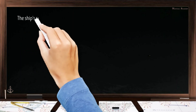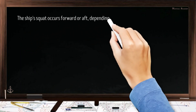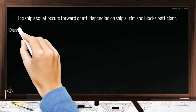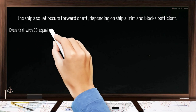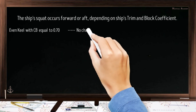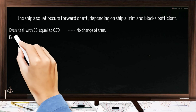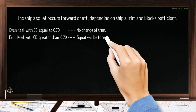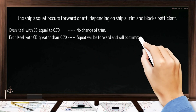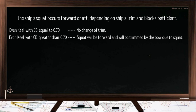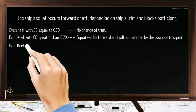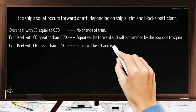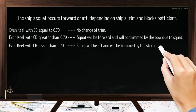Ship squat usually takes place either on the forward or after part of the vessel depending on the ship's trim and block coefficient. If the ship is floating on an even keel with a block coefficient equal to 0.70, there will be no change of trim. If the block coefficient is greater than 0.70, squat will take place forward and the ship will be trimmed by the bow. If the block coefficient is less than 0.70, squat will take place aft and the ship will be trimmed by the stern.